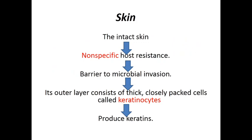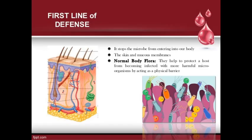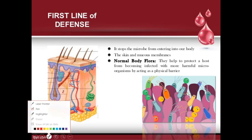The physical barriers include majorly skin and mucosal membranes of many organs. Skin is an intact layer that separates the body's internal components from the environment. This skin is made up of keratinocyte cells which produce keratin. Looking at the structure of skin, there are three ways by which skin protects the body from microorganisms.